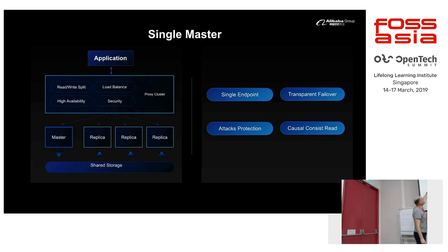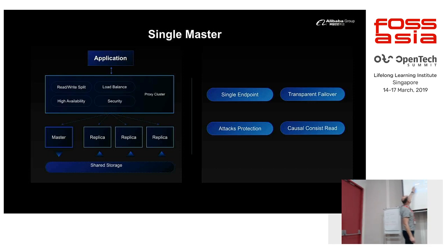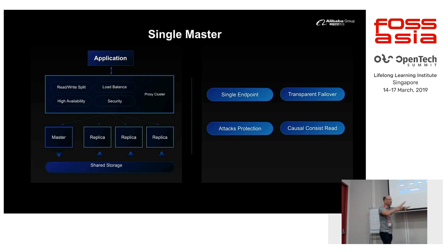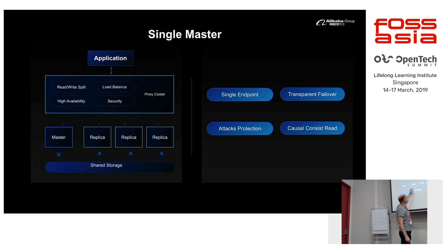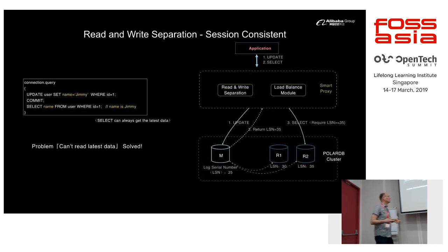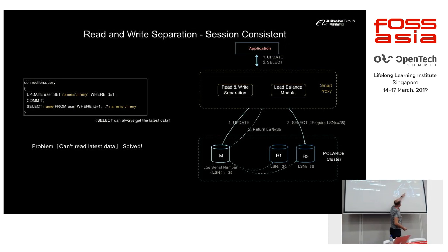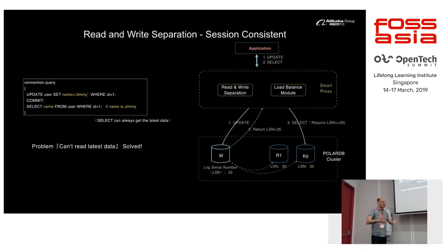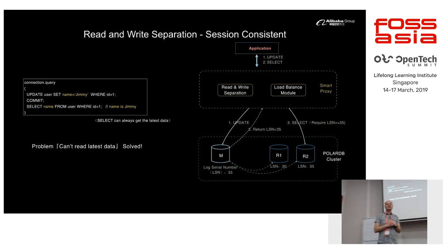Only a single master is supported currently. The proxy splits traffic, sending writes to the master and reads to replicas, load balancing between replicas. Should the master go down, the proxy reroutes requests to a new master chosen from the replicas. We also support read-your-writes: after an update, the proxy returns the log sequence number to the client, and when the read is sent to a replica, that replica is informed of this LSN so it applies enough redo log to return a consistent view of the updated data.